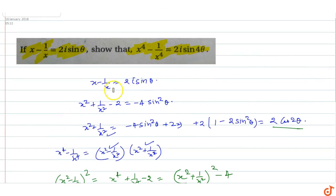So this is the answer. We have proved that x⁴ minus 1 by x⁴ is equal to 2i·sin4θ, given that x minus 1 by x equals 2i·sinθ.